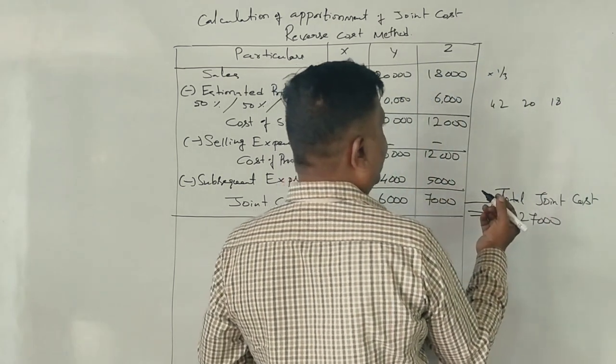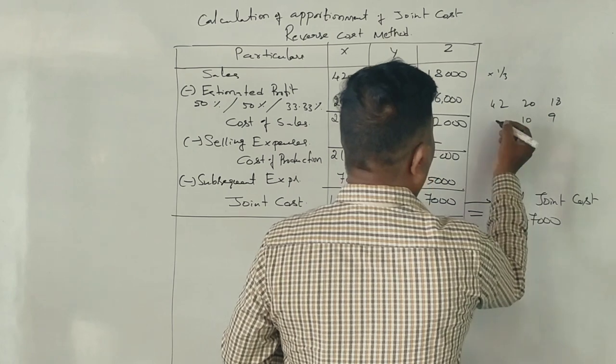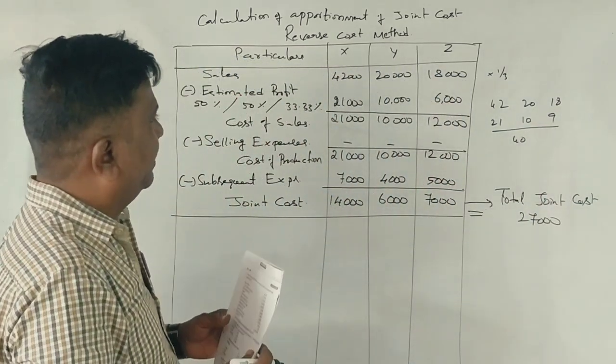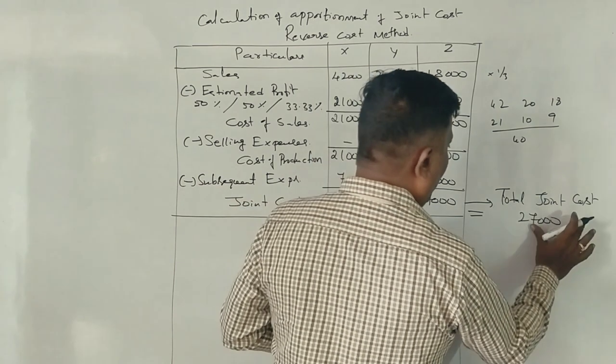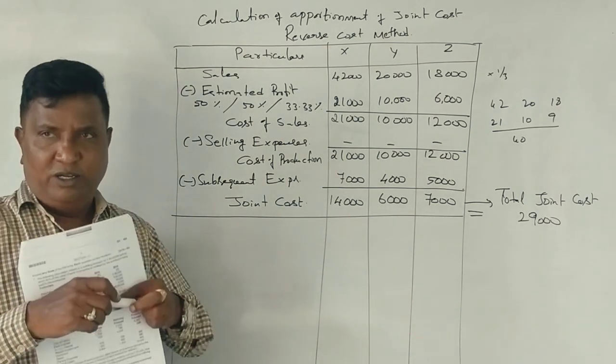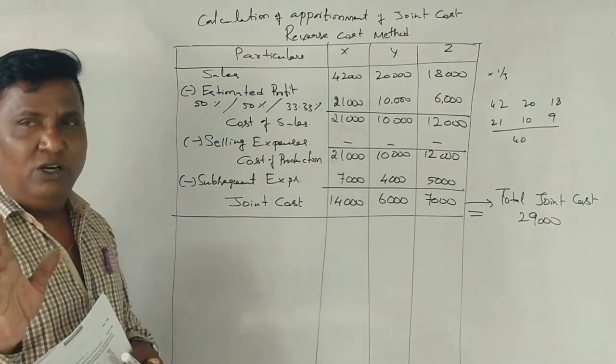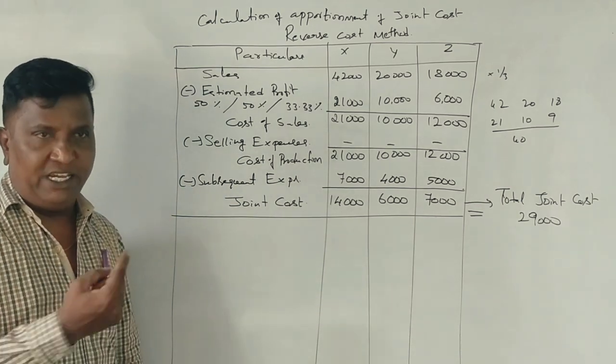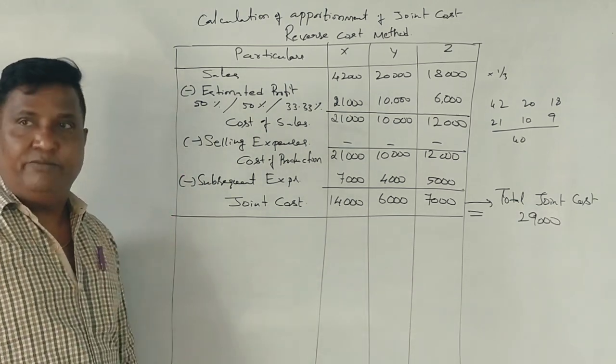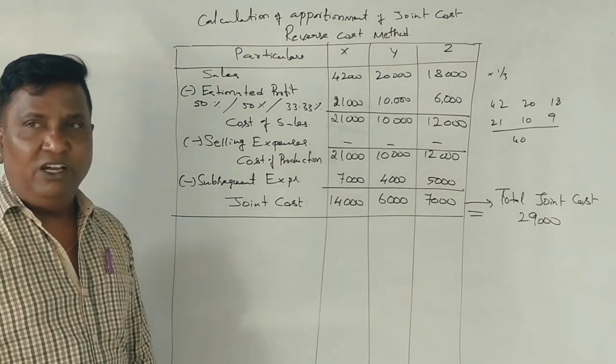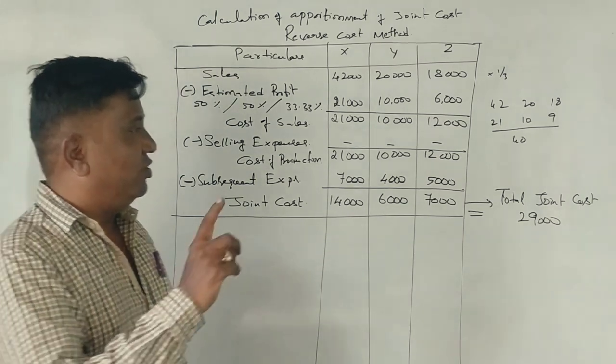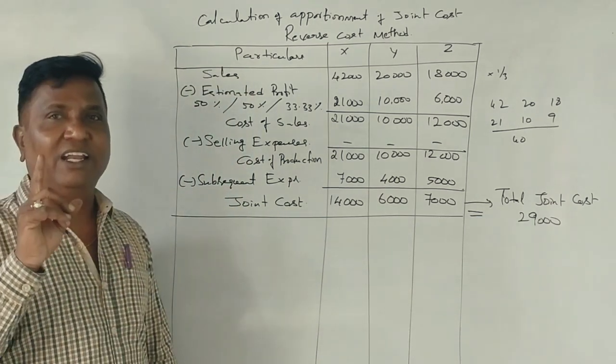How do you remember? 21, 30, 40. 20, 20. The joint cost is 29,000. The problem is that the joint cost is 29,000. I will tell you one more way of solving this question. The joint cost is the material, labor, and expenses - 27,000, 29,000.